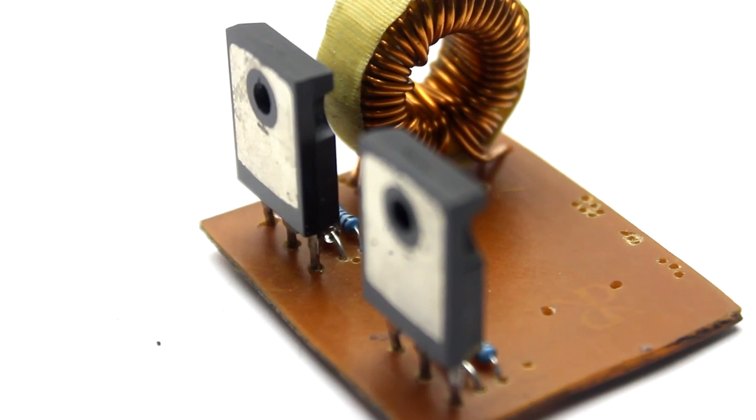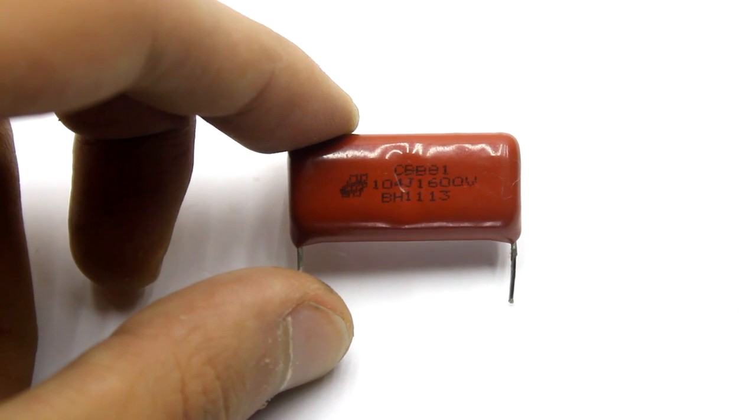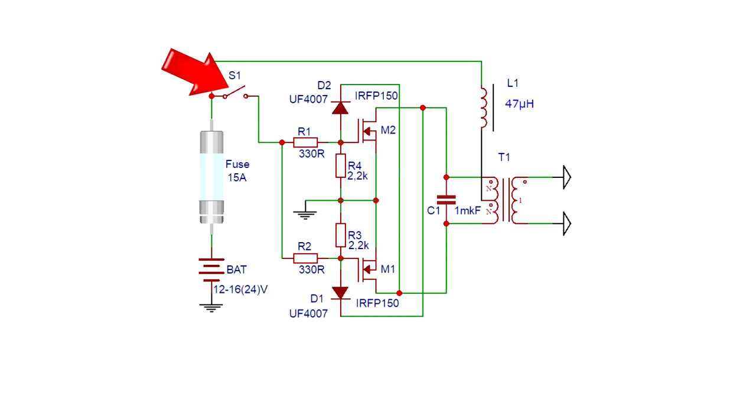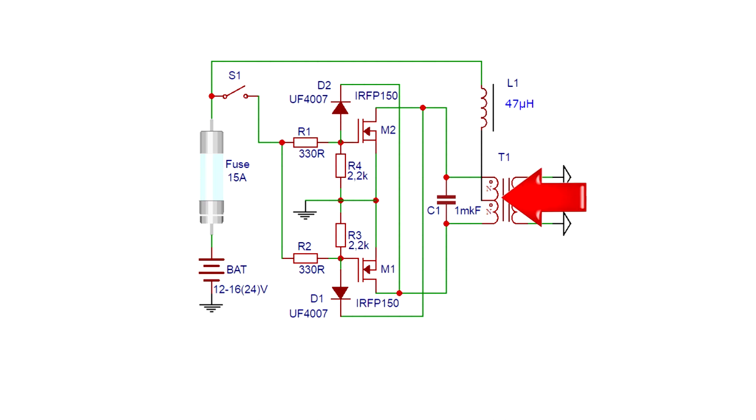All we need are two powerful field effect transistors, a pulse transformer and a resonant capacitor. The circuit is started with a low current button. The operating frequency depends on the capacitance of the resonant capacitor and the inductance of the primary winding of the transformer.